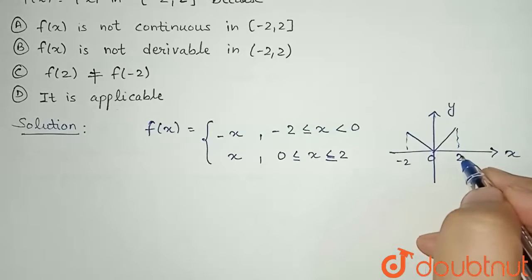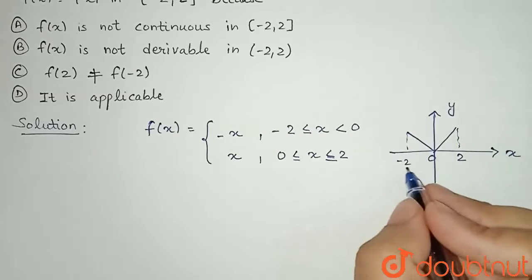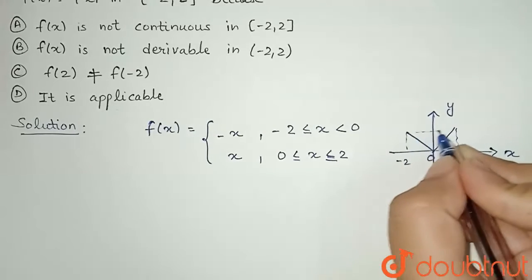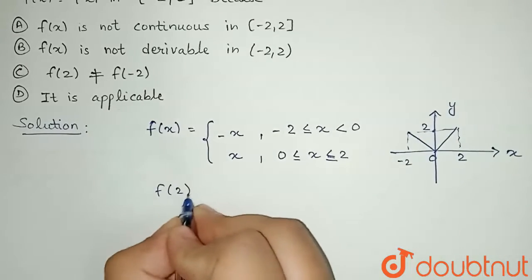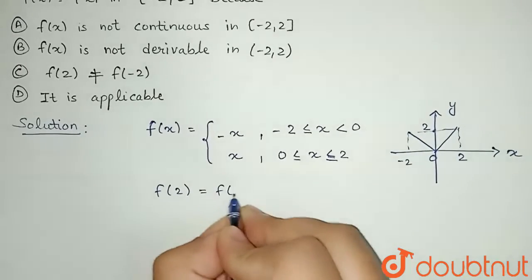If I talk about continuity, then you can see here that this value will be 2. So from here, I can say that f of 2 equal to f of minus 2.